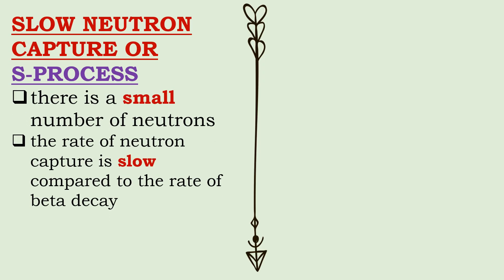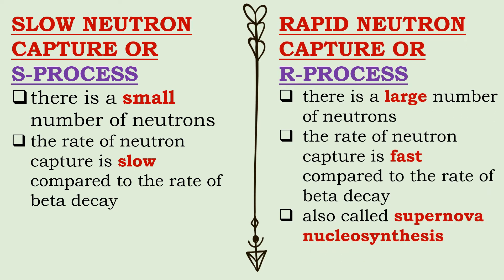The slow neutron capture process, or S-process, is termed slow because the rate of neutron capture is slow compared to the rate of beta decay. Therefore, if a beta decay occurs, it almost always occurs before another neutron can be captured. Rapid neutron capture, or R-process, on the other hand, happens when there is a large number of neutrons. It is termed rapid because the rate of neutron capture is so fast that an unstable nucleus may still be combined with another neutron just before it undergoes beta decay. The R-process is associated with a supernova. The temperature after a supernova is tremendously high, so the neutrons are moving very fast. Because of their speed, they can immediately combine with the already heavy isotopes.